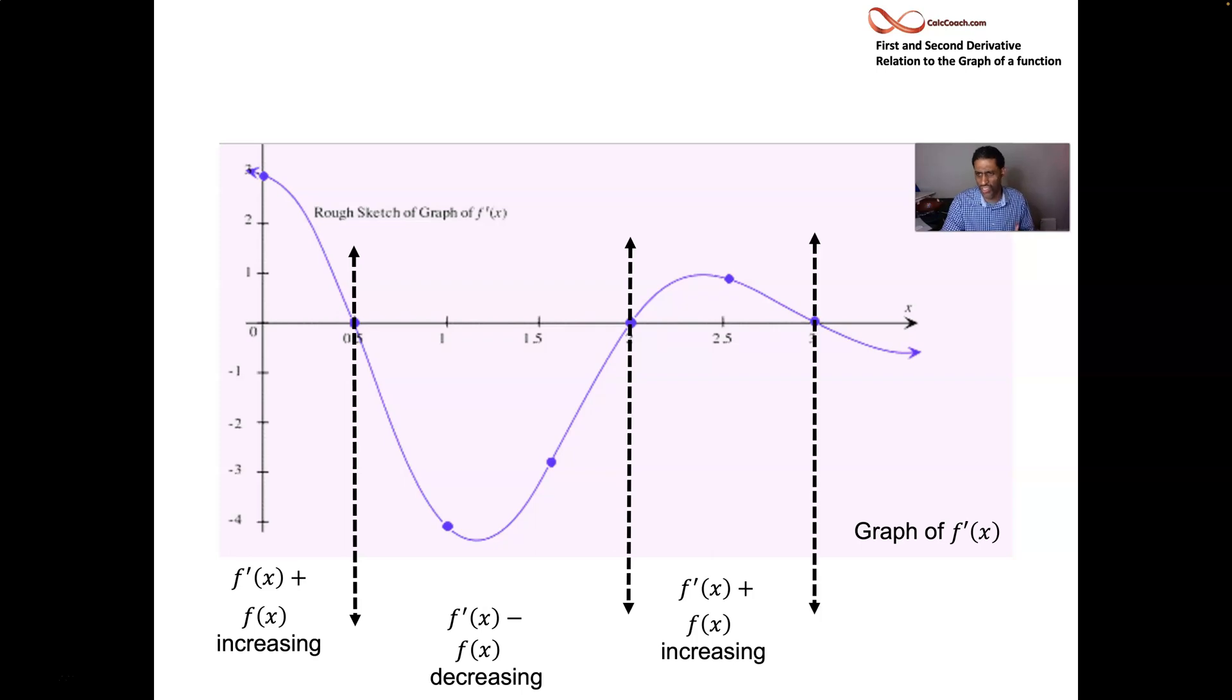But then your function switches because the graph of the derivative goes below the x-axis. That means you're back to decreasing. We're going to find out with the first derivative test in the next video that when you change from increasing to decreasing, that's a local max if your derivative is 0. And when you change from decreasing to increasing and your derivative is 0, that's going to be a local min.